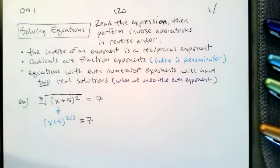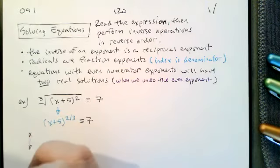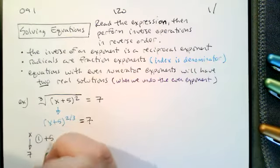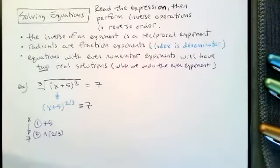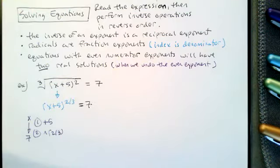Now we want to read what's happening to turn an x into a 7. The first thing we do is add 5, and the second thing we do is raise to the 2/3 power. Since the radical and the square happen right next to each other, we can combine them into a 2/3 exponent.